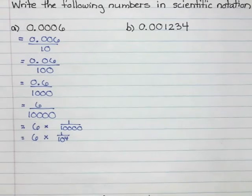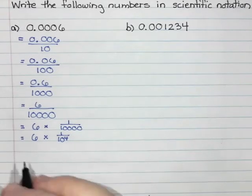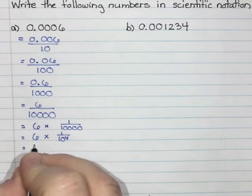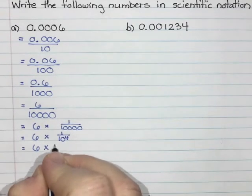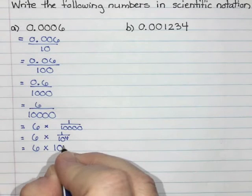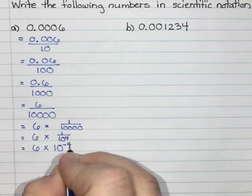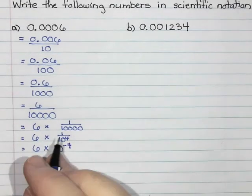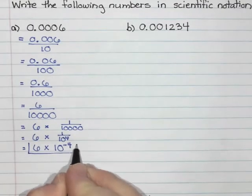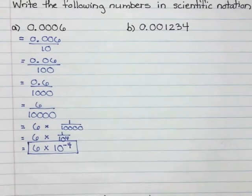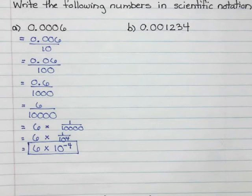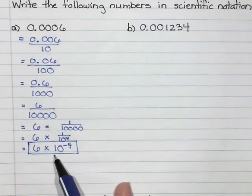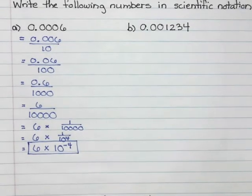Now I have a fraction with an exponent, and we did learn that negative exponents make fractions. So this is actually the same thing as 6 times 10 to the power of not positive 4 but negative 4. So in scientific notation, 0.0006 is the same as 6 times 10 to the power of negative 4.